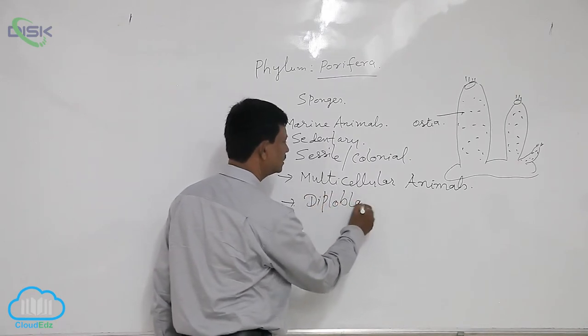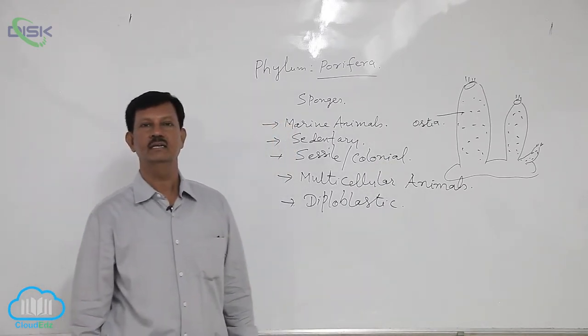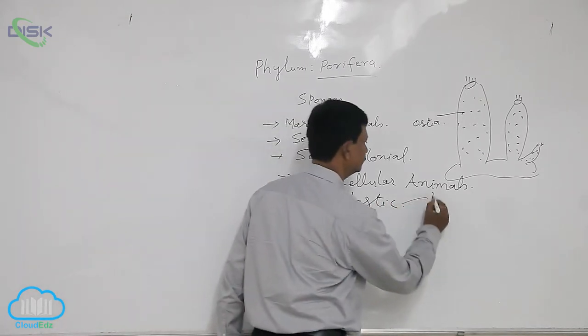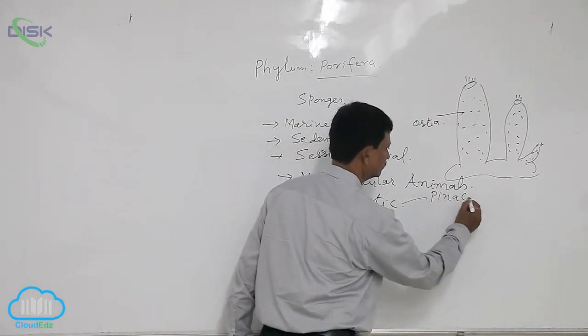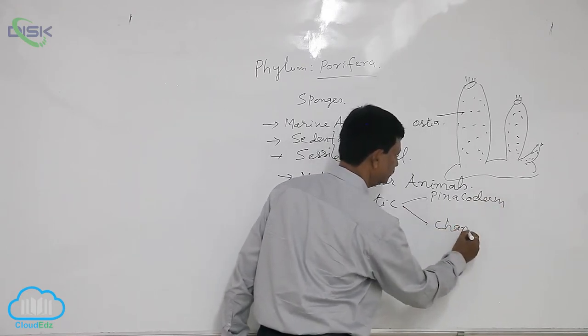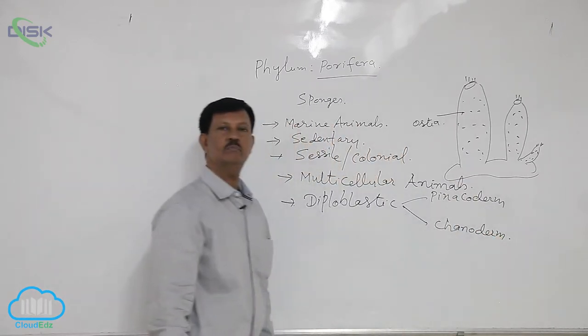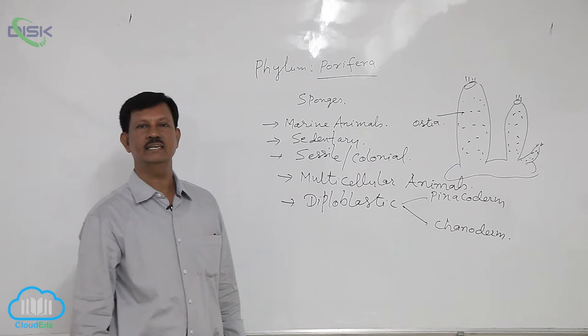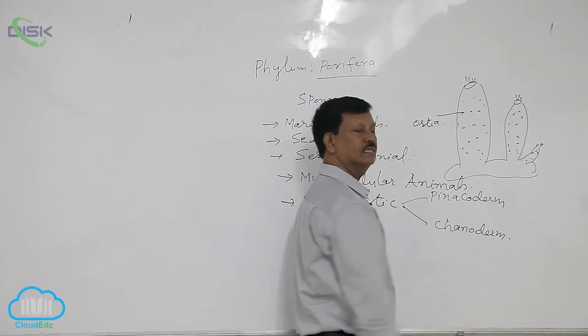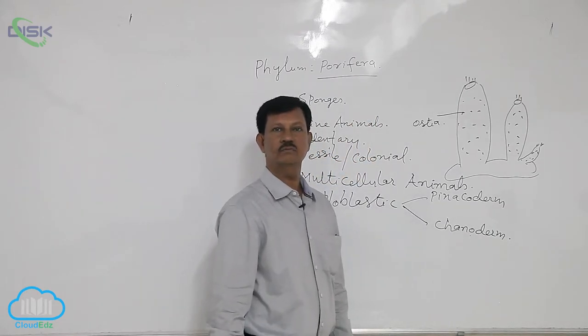They are diploblastic animals. In the body cavity, two layers are present. Outer side: Pinacoderm. Inner side: Choanoderm. These are the two layers present in the body. Pinacocytes give protection to the body. Choanocytes consist of collar cells and are useful for food digestion.